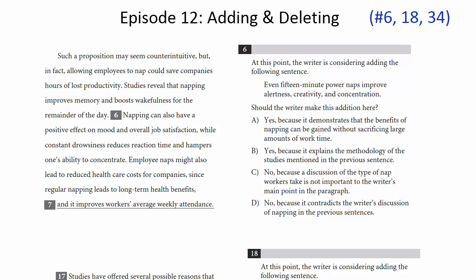So here, as you're going to see in these questions, they're going to give us a sentence that we have to add at a certain point, and we have to determine is it a good thing to add it, and if yes or if no, why? So let's take a look at number six. At this point, the writer is considering adding the following sentence. Even 15-minute power naps improve alertness, creativity, and concentration. Should the writer make this addition here?